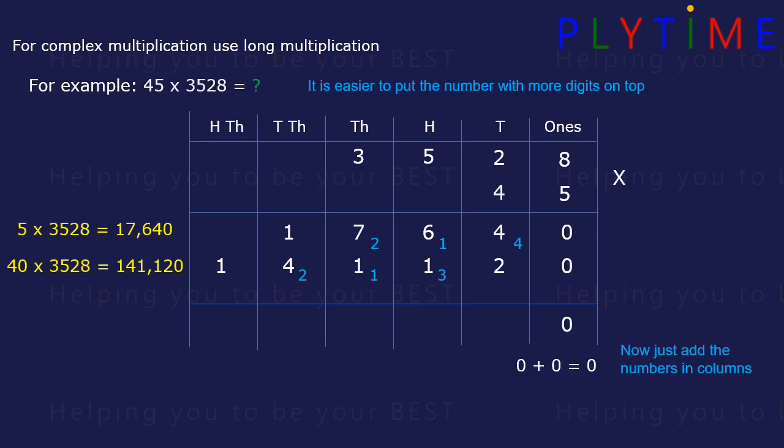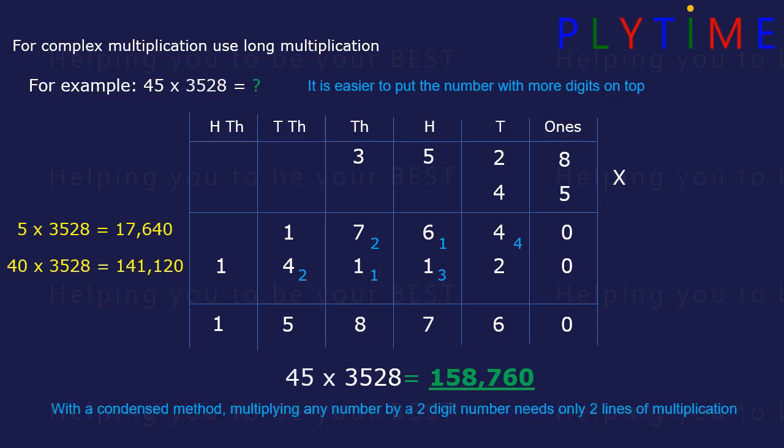0 plus 0 is 0. 4 plus 2 is 6. 6 plus 1 is 7. 7 plus 1 is 8. 4 plus 1 is 5. 5 and 1 plus 0 is 1. So our total is 158,760.